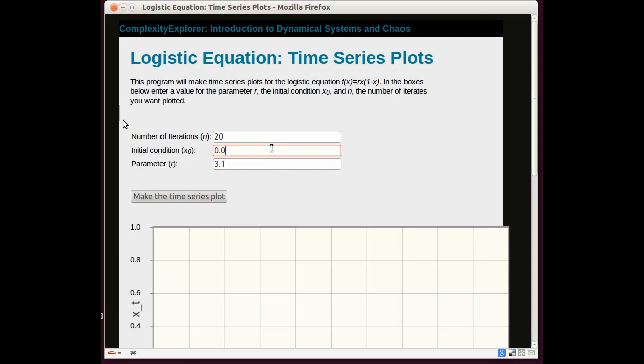I asked you to find the first few iterates for the logistic equation with an r value of 3.1 and an initial condition of 0.1. Let's try that and see what happens.